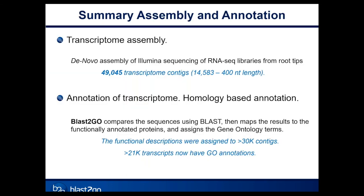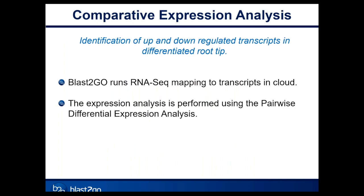In summary for these first two steps: the assembly produced over 49,000 contigs, we assigned some kind of functional description to over 30,000 contigs, and over 21,000 transcripts now have Gene Ontology annotations. Now let's move to the next step, where we identify transcripts which are up- or down-regulated in differentiated root tips.